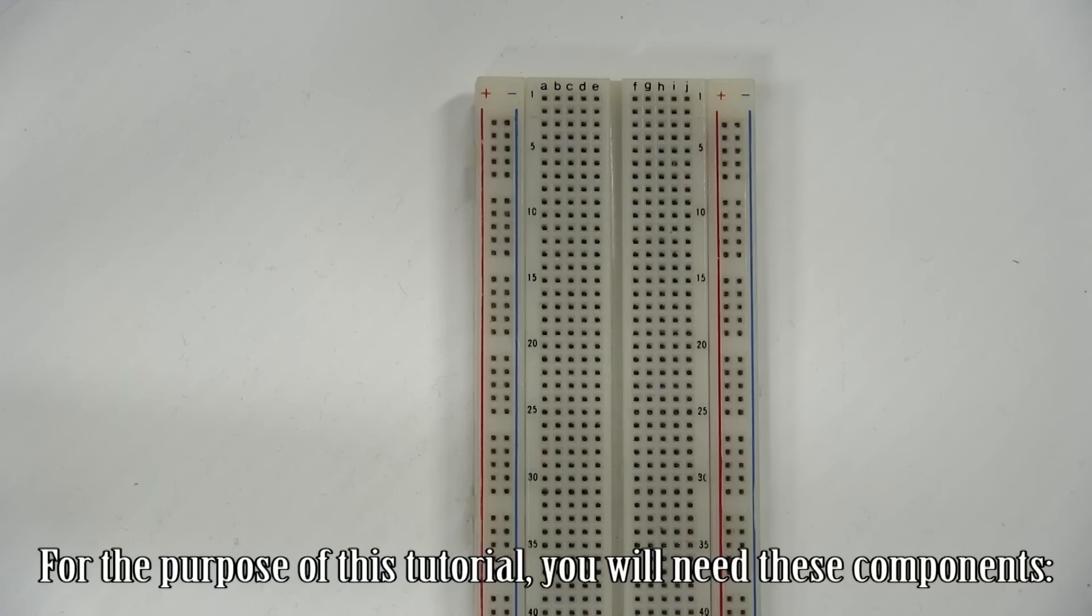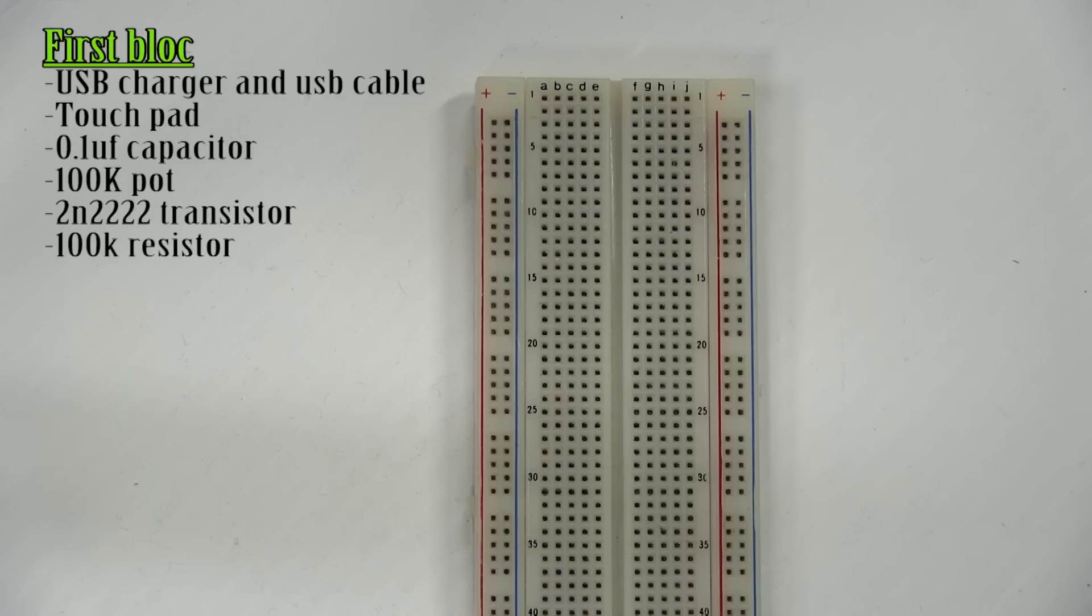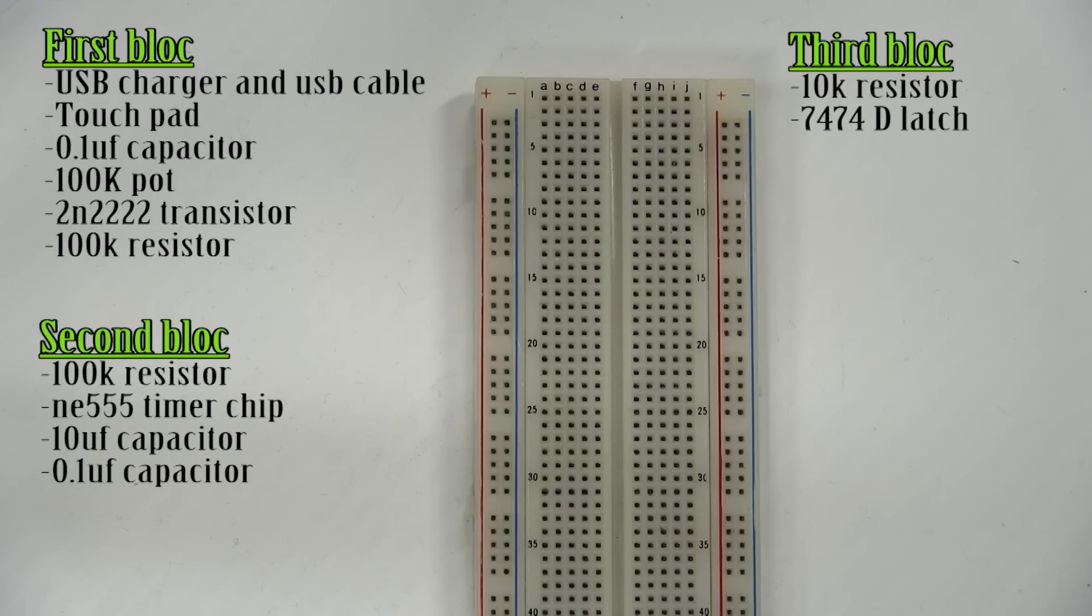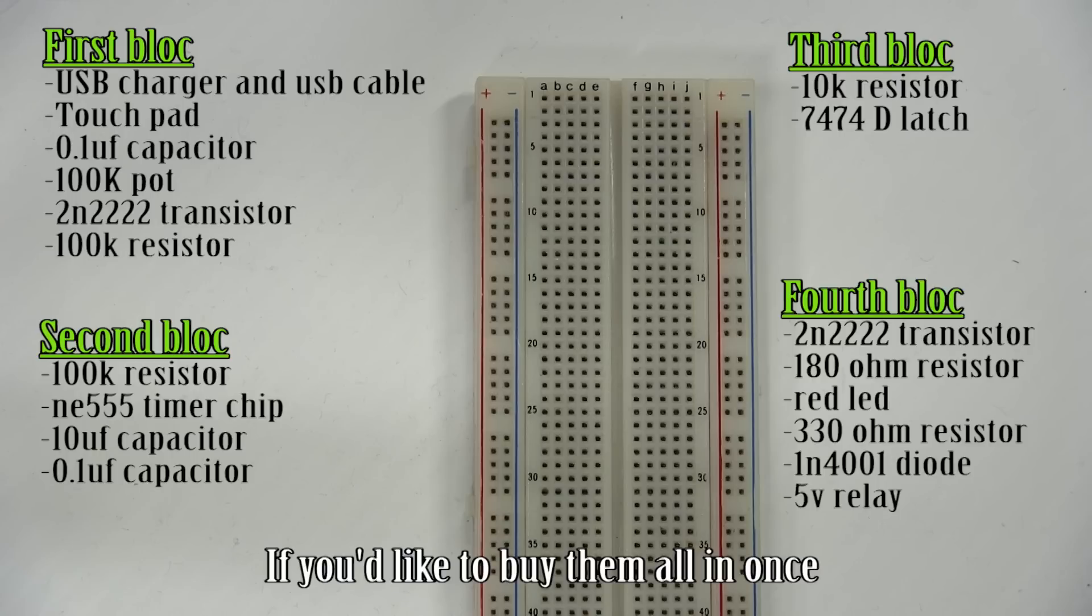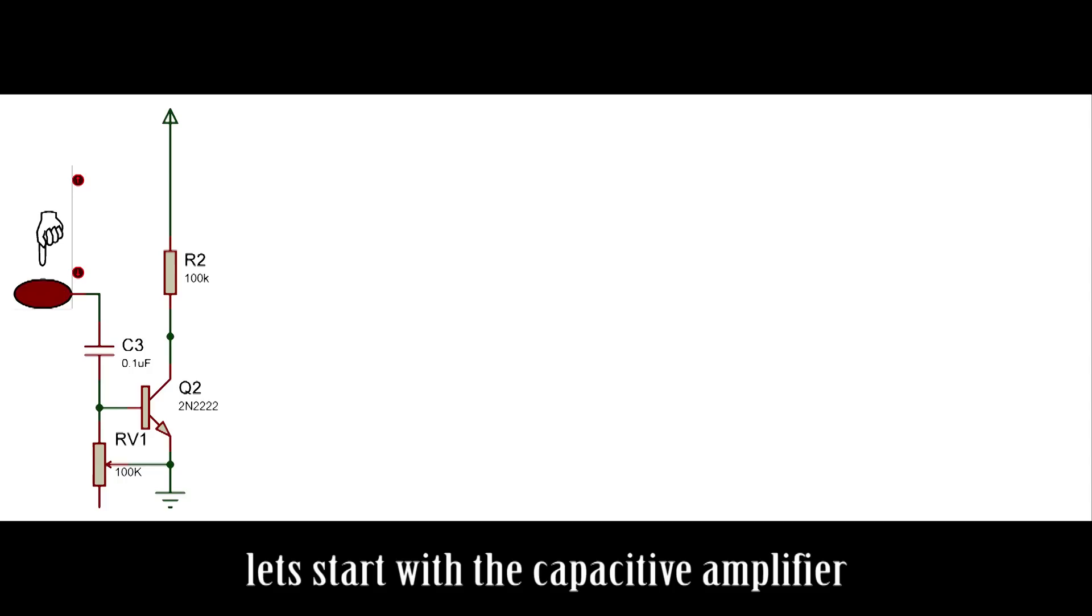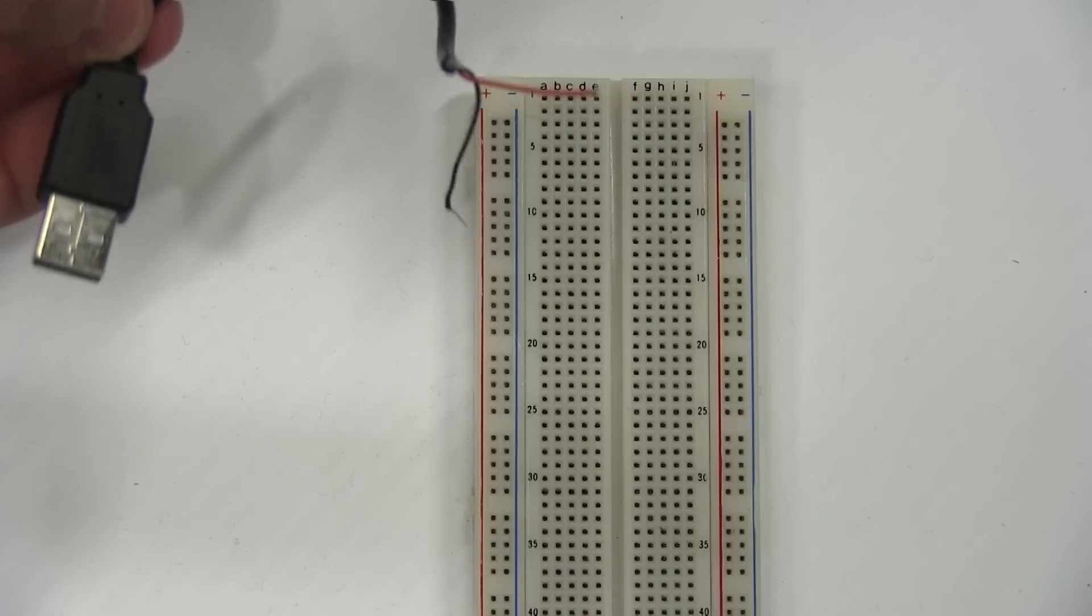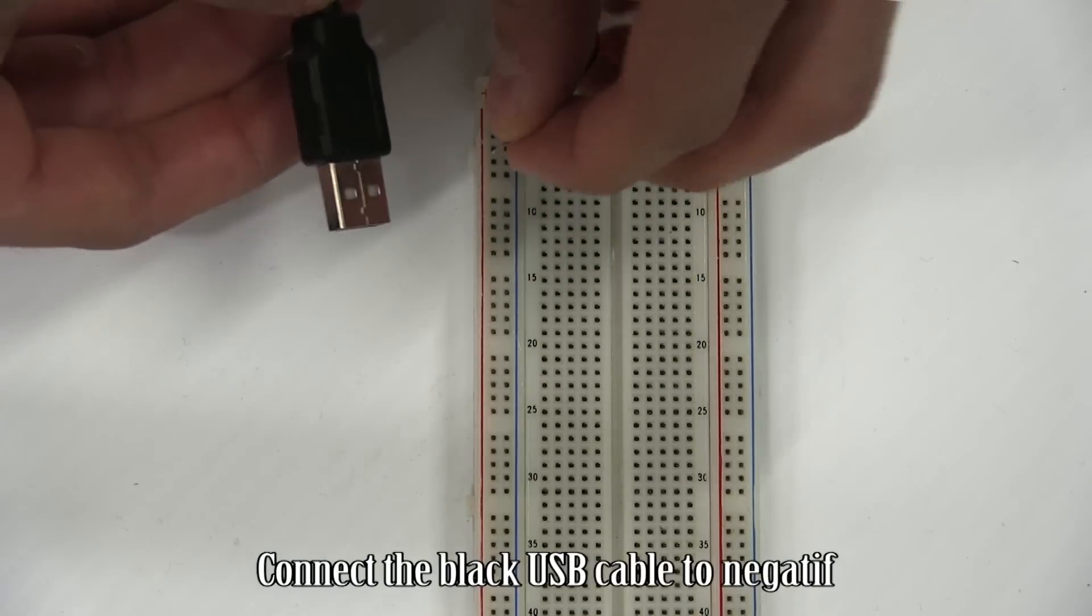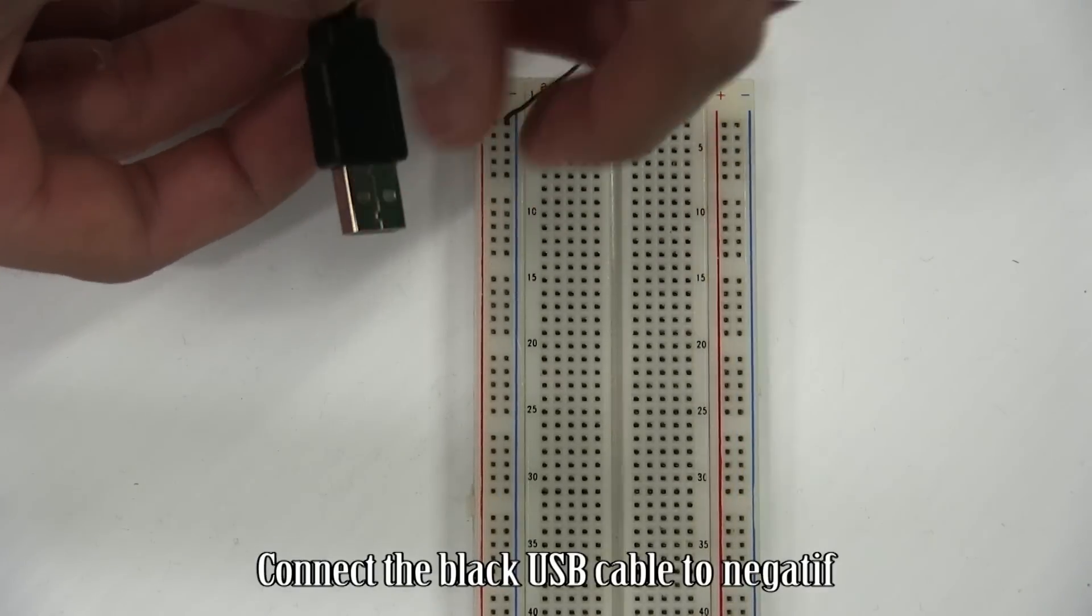purpose of this tutorial, you will need these components. If you'd like to buy them all at once, you could always go to diyordie.co/product. Let's start with the capacitive amplifier. Connect the black USB cable to negative and